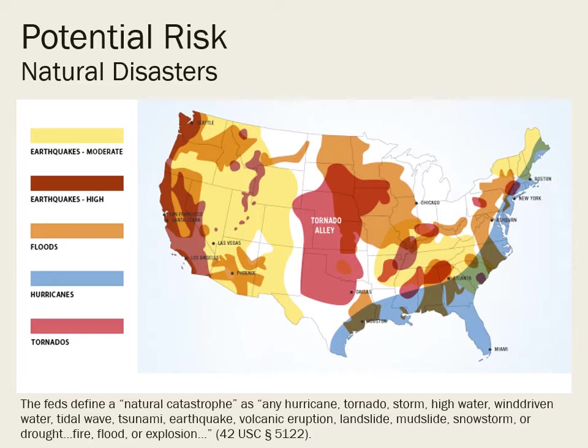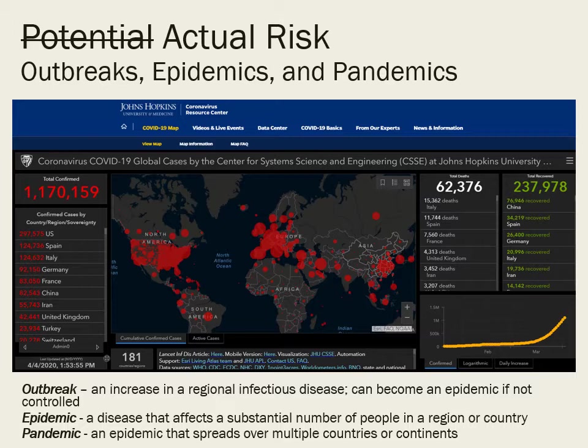Let's talk about outbreaks, epidemics, and pandemics. These are not included in the federal definition of a natural catastrophe, but they can be natural disasters, and they can also be consequences of a natural disaster. An outbreak is an increase in a regional infectious disease. If not controlled, it can spread and affect a substantial number of people — becoming an epidemic. If an epidemic is uncontrolled, it can become a pandemic, which spreads across continents. And that's what we are seeing now.